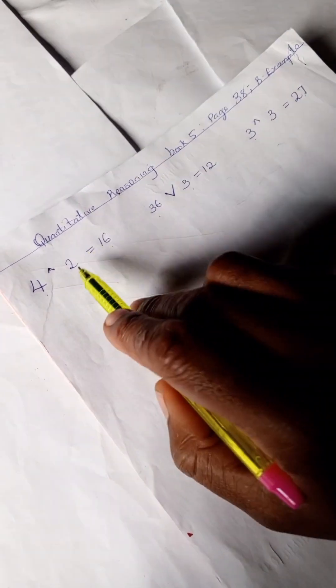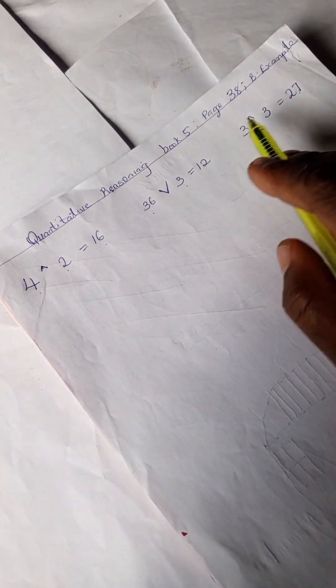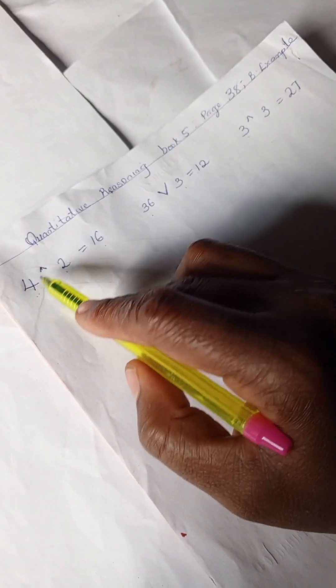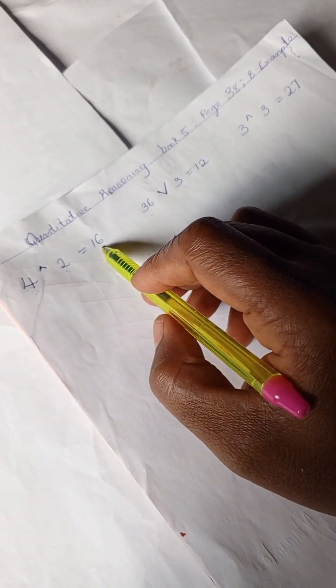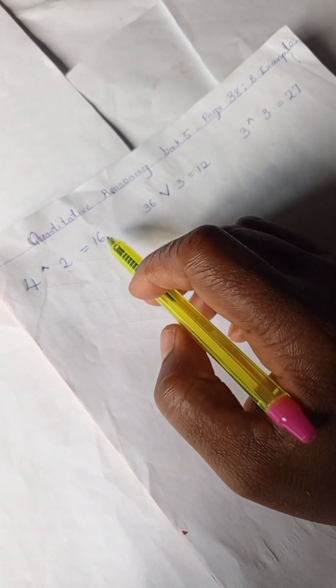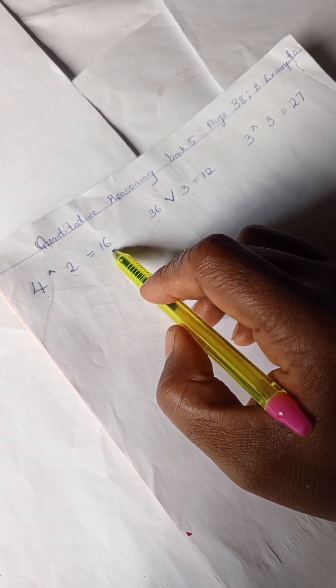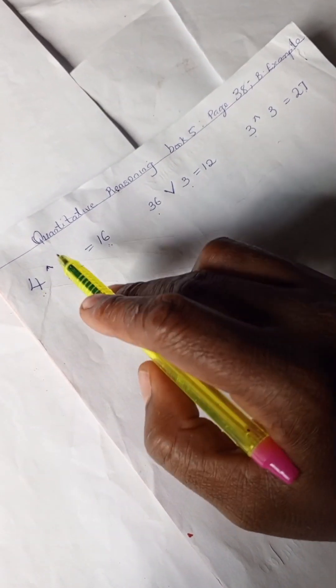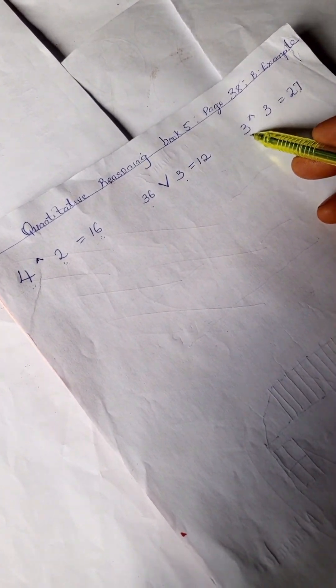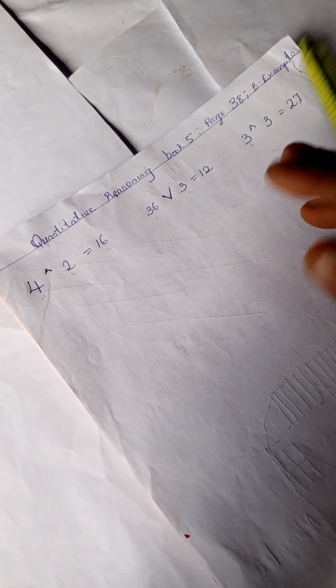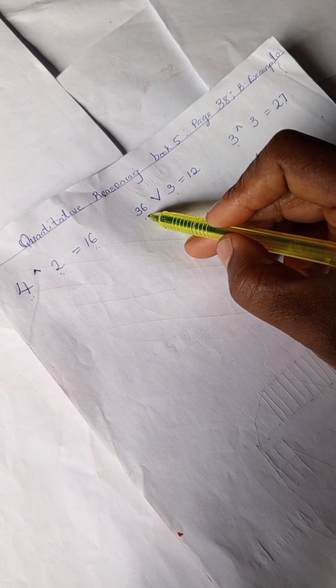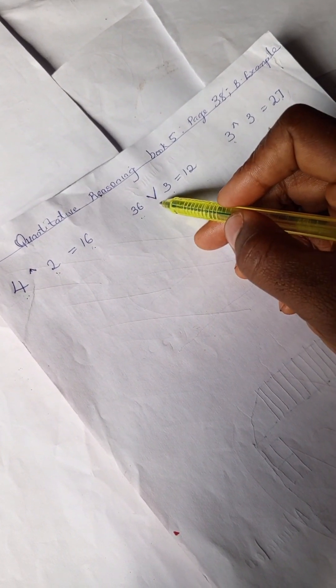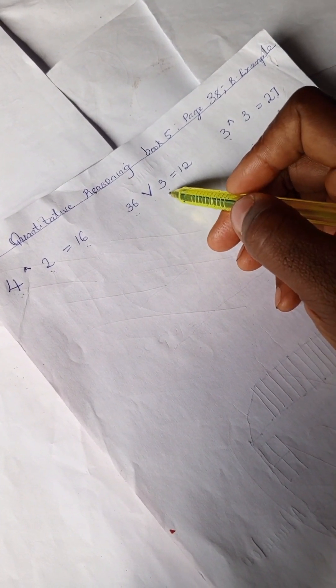How were they able to come about this number? Look at two here and look at three here, which means four to the power of whatever number you have here would give you what you have here. So four to the power of two will give you 16, which means four times four, four into two places. And here we have three into three places, you have 27.